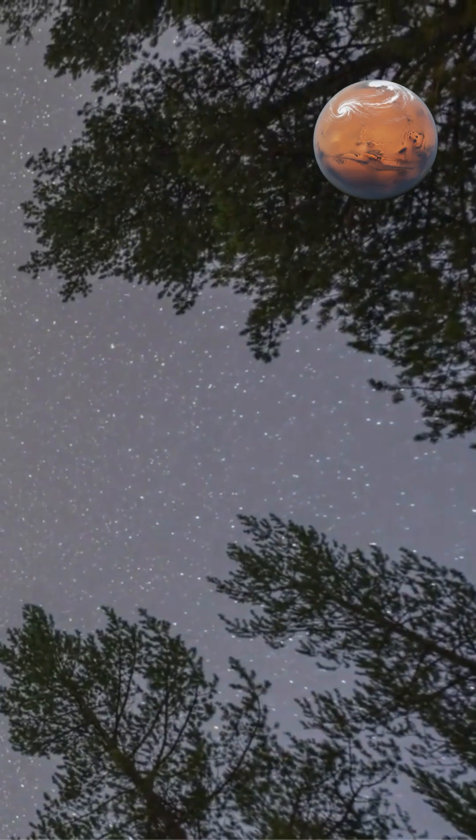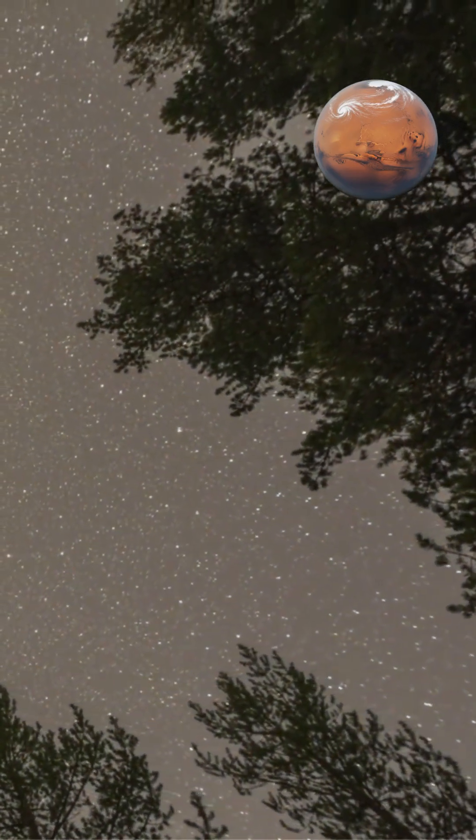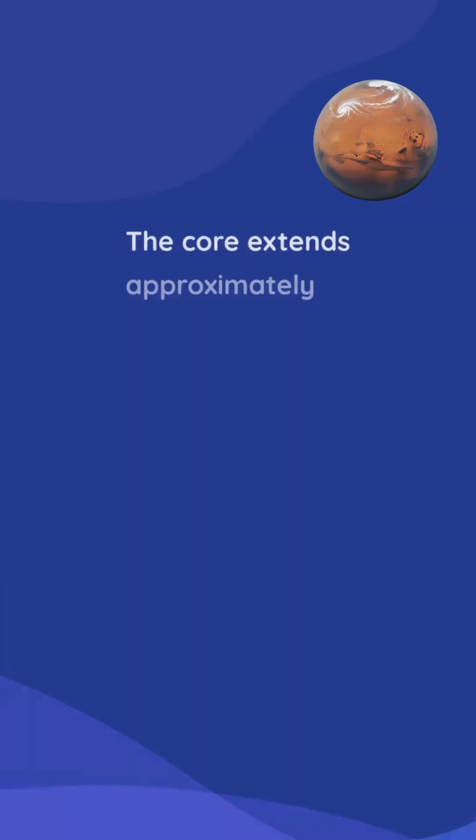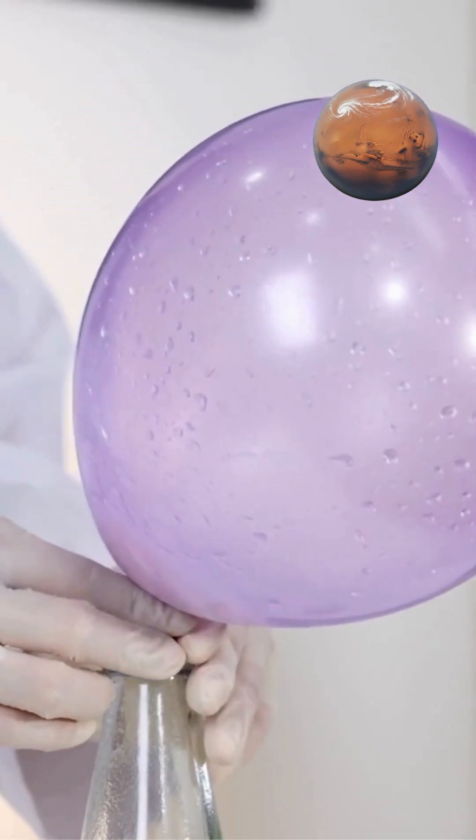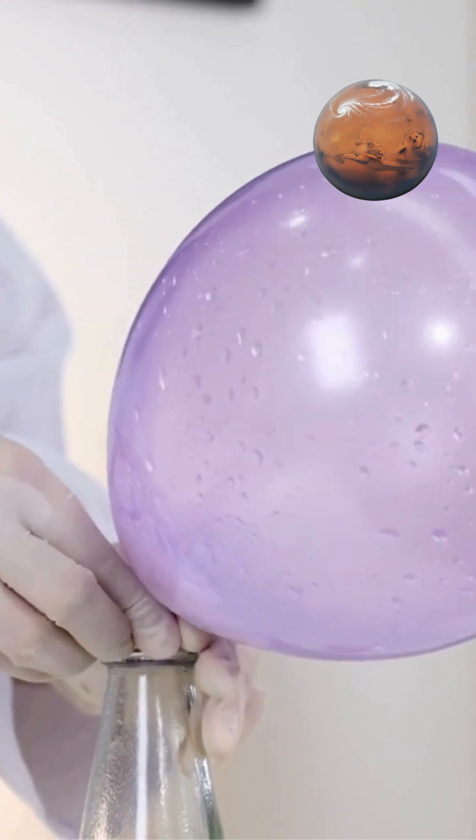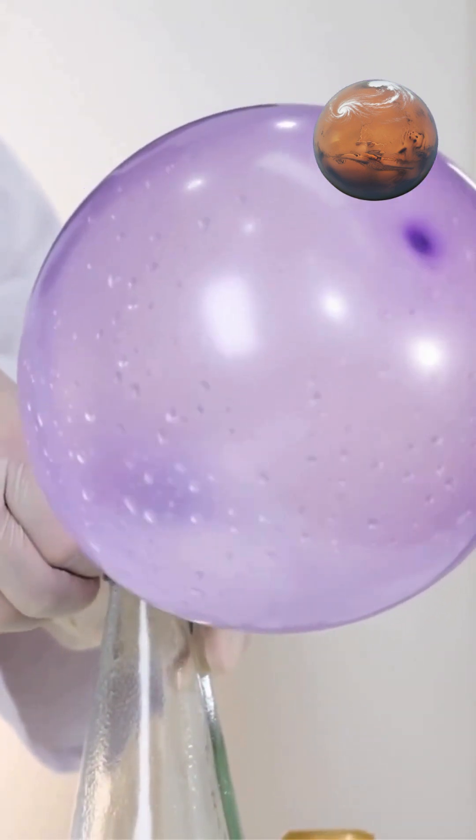Our Sun's core currently consists mainly of hydrogen undergoing fusion into helium. The core extends approximately 140,000 miles from the Sun's center, occupying about 25% of the Sun's radius. Despite being the smallest part by volume, the core generates virtually all the star's energy through thermonuclear fusion.